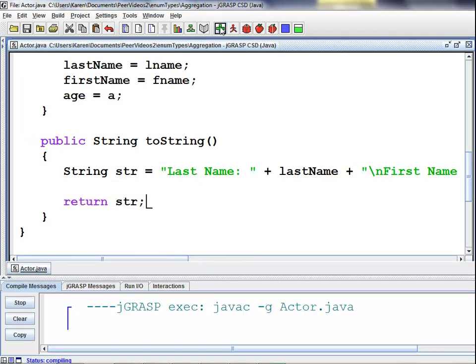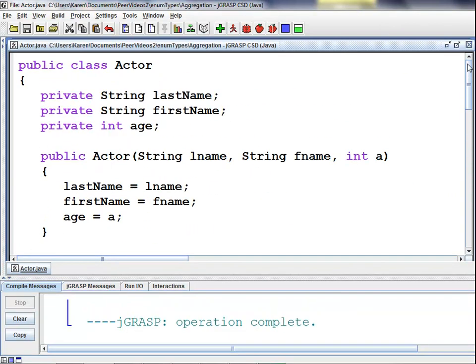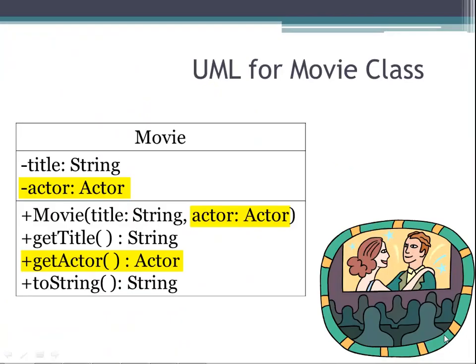We'll compile our actor code, and that's it for the actor class. Here we have the UML diagram for our movie class. We have a string title and an actor object actor. We have a movie constructor which accepts a string title and an actor object actor as arguments. We have a getTitle method which returns a string, a getActor method which returns an actor, and a toString method which returns a string with the information of the movie class. Notice how the highlighted actor objects are acting as fields inside the movie class.